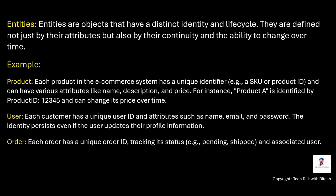For example, a product has a unique identifier such as SKU or product ID, and attributes like name, description, and price — for instance, product A identified by product ID 12345. User is another entity; each customer has a unique identifier like user ID or profile ID, with attributes such as name, email, and password. The identity persists even if the user updates their profile information.